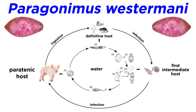For example, Paragonimus westermani, or the oriental lungworm, has aquatic snail and crustacean intermediate hosts, but may also have an additional paratenic host — pigs in particular — from which humans can be infected through consumption.